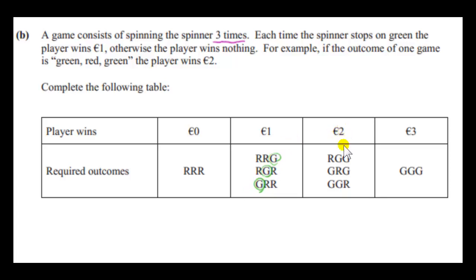To win two euros, G must appear twice. So we just, and R must appear exactly once. So how many ways can we combine one R with two Gs? Well, R can appear at the start, it can appear in the middle, or it can appear at the end. But the key thing is to have just two Gs in our combination. And finally, to win three euros, well, the spinner has to point to G three times. There's only one way that that can happen.